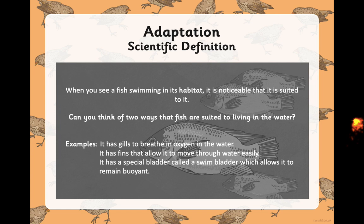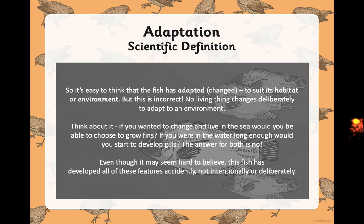The scientific definition of adaptation. When you see a fish swimming in its habitat, it's noticeable that it is suited to it. Ways that fish are suited to living in water: they've got gills to breathe in the water, fins that allow them to move through the water easily, and a special bladder called a swim bladder which allows it to remain buoyant — like floating — in the water. They're suited to living in water. They're scientifically adapted to do so. It's easy to think that the fish has adapted or changed to suit its habitat, but this is not correct. No living thing can deliberately change to adapt to an environment — if you wanted to live in the sea, you wouldn't be able to grow fins or gills.